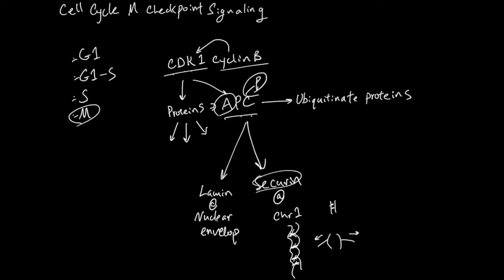And then the third target of the APC is the cyclin B itself. This is because as cyclin B accumulates, CDK1 function increases and a lot of magic happens. And this magic has to stop, otherwise it's going to get out of control.